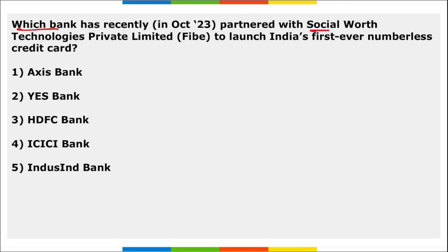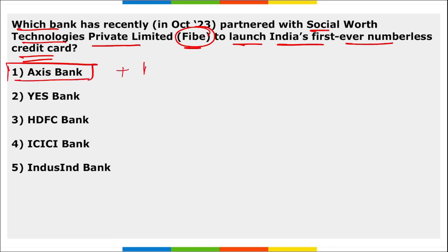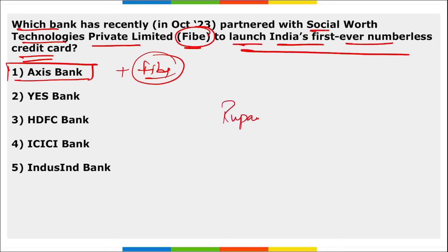Which bank partnered with Social Worth Technologies Private Limited — FIVE — to launch India's first-ever numberless credit card? This credit card is known as the FIVE Access Credit Card and will be powered by the RuPay network.